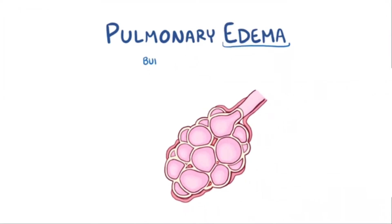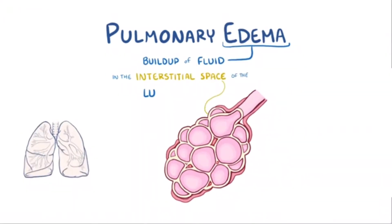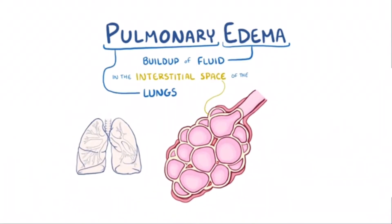Pulmonary edema refers to the buildup of fluid in the interstitial space of the lungs, which is the lung tissue space that's outside of the capillaries and in between alveoli, which are the tiny air sacs in the lungs.